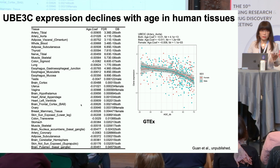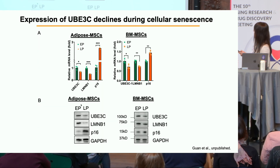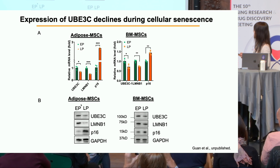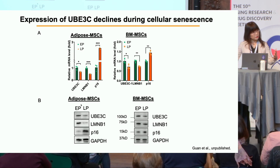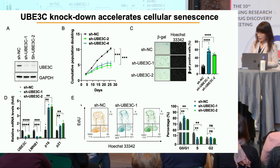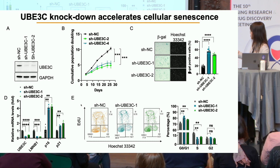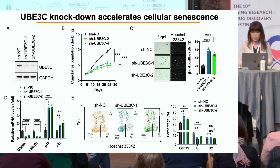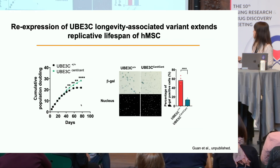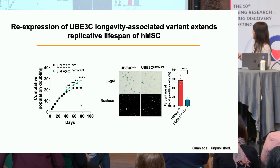At the protein level, the same pattern is seen in kidney and muscle. When we look at adipose and bone marrow-derived mesenchymal stem cells, UB3C levels decline during senescence at both the mRNA and protein level. So when we mimic this aging effect — namely the decline — by knocking down UB3C expression in MSCs using two different shRNAs, we see accelerated senescence accompanied by different markers of senescence. And when we antagonize this aging effect by re-expressing wild-type versus centenarian mutant UB3C, the centenarian allele increases replicative lifespan.